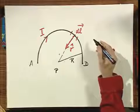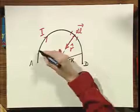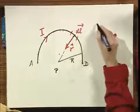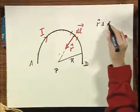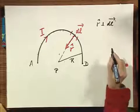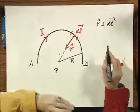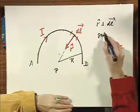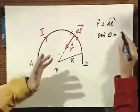Well, what is interesting is that every element DL, for every element DL, R is perpendicular to DL. And therefore, in all cases, the sine of that angle theta is the same, one.